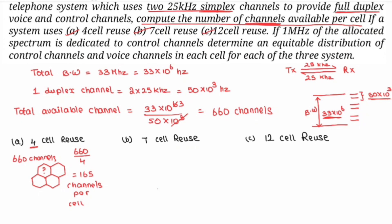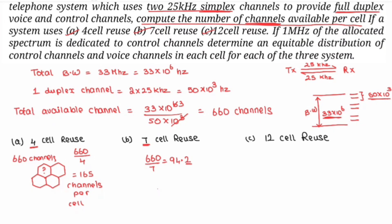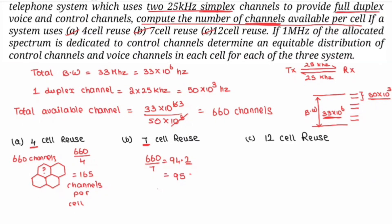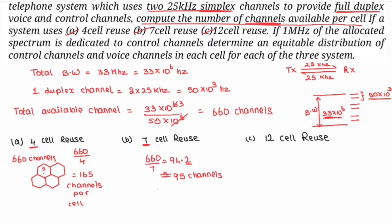So for 7-cell reuse, each cell gets approximately 95 channels. We round 94.2 up to 95. This approximate value is what we use for channel distribution in the 7-cell reuse case.